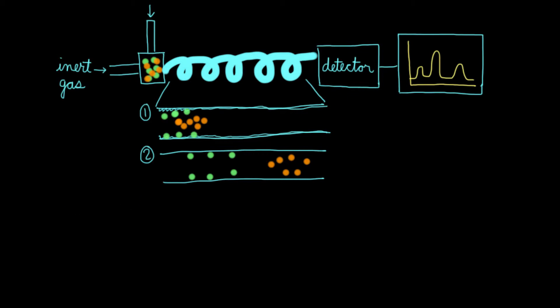You can already tell that the orange one is going to reach the detector first, meaning it'll produce the first peak. This would probably correspond to this on the graph. But wait, what's that tiny peak next to it? Usually that represents the solvent that you dissolved your compound in. That solvent is usually something with a pretty low boiling point, so it gets pushed through first.